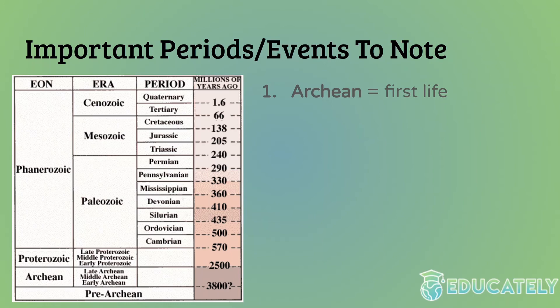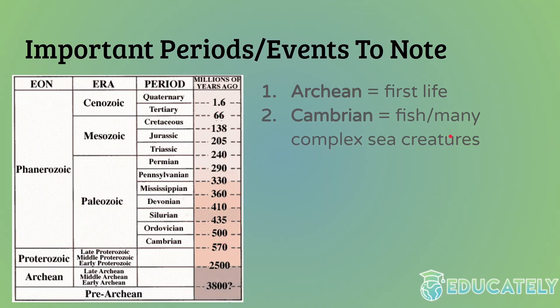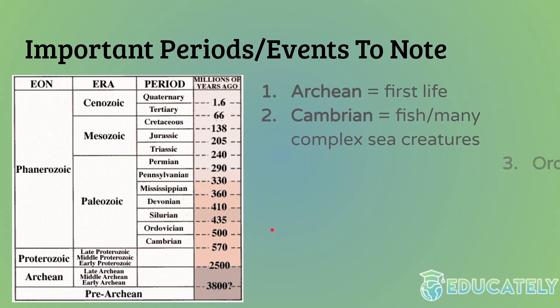Once you get to the Cambrian period — roughly 570 million years ago — that's when you start getting fish and many complex creatures. This is the biggest evolutionary boom in history, with so many new creatures appearing. Once you get towards the Ordovician period, you start getting vertebrates. Everything before then were invertebrates — you didn't have solid backbones. But you have vertebrates at that point.